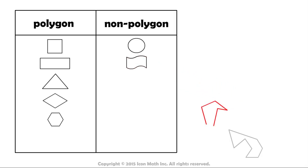This shape is made up of line segments, but as you can see, it is not closed. So, it is not a polygon.